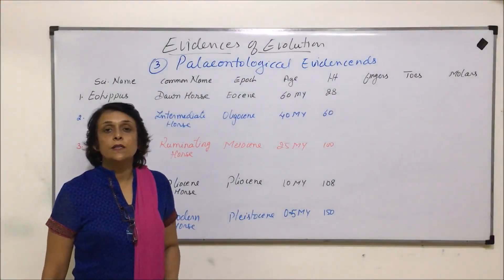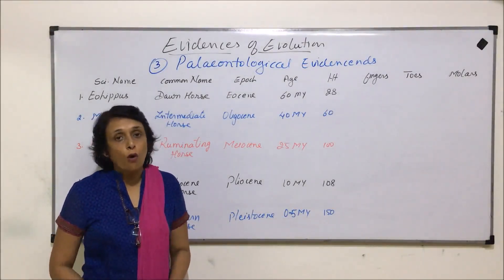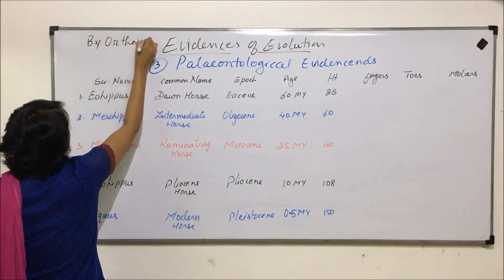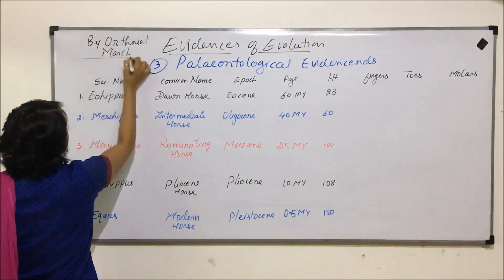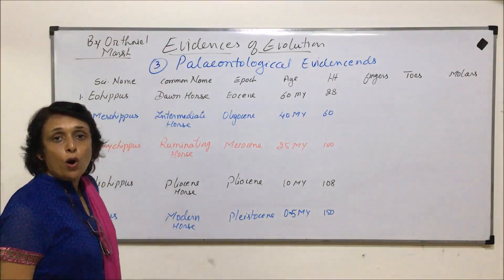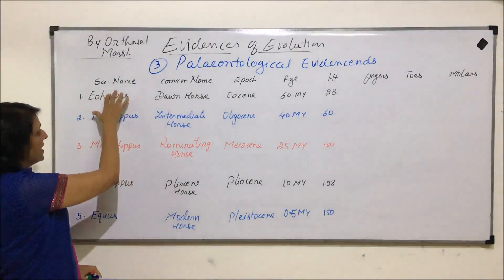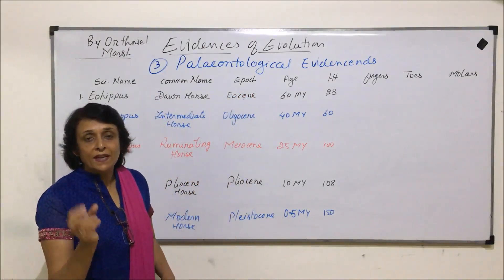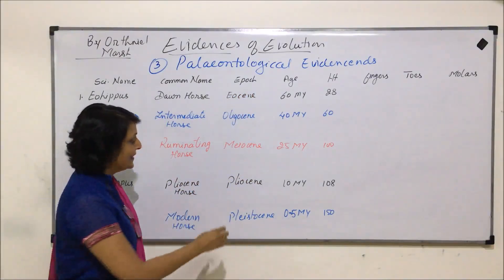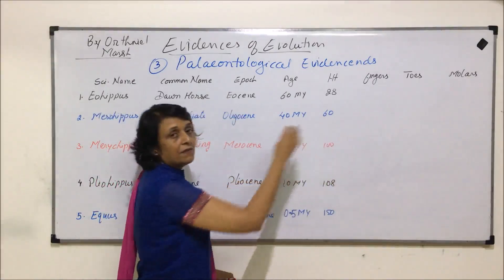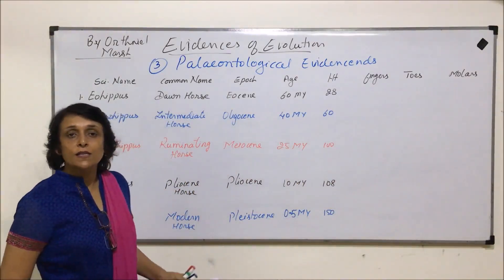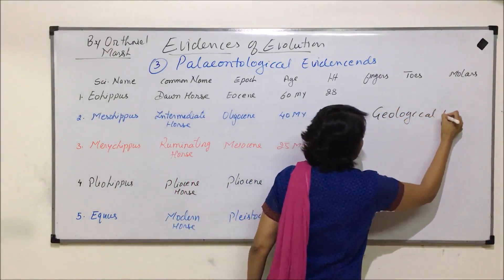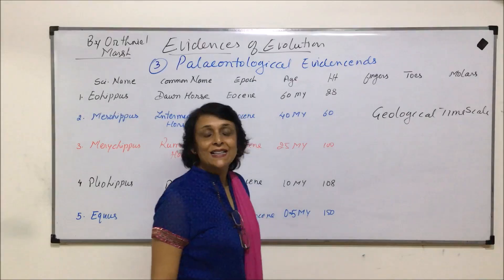What we are discussing now is the complete evolutionary history of the horse. It was described by Othniel Marsh, and this is based on all the fossils which have been found. We have written the scientific names of all those fossils, their common names, the epochs — that is, which time period of the earth they existed in — their age, height, and more important details.